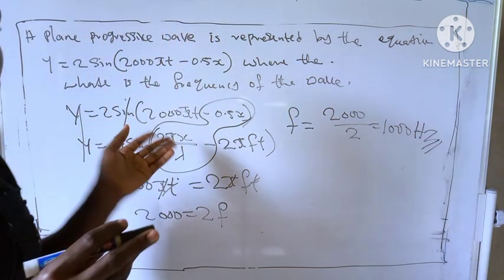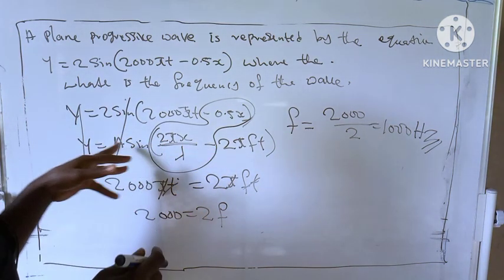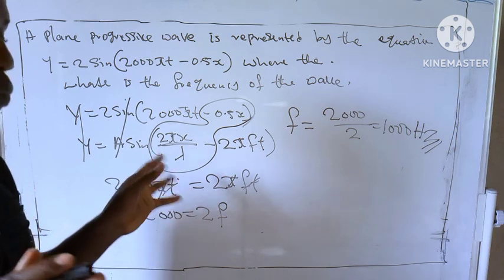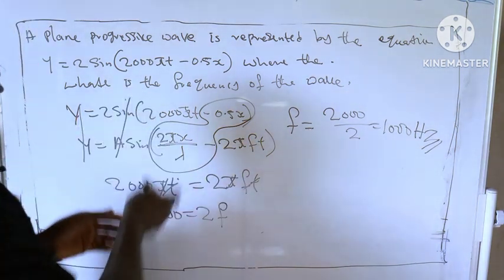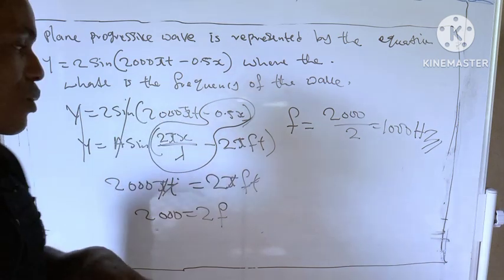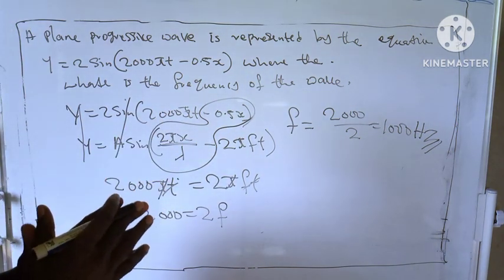So if you see a similar equation like this, just use this formula: y = a sin(2πx/λ - 2πft). You compare them, follow this procedure, and you will get your answer.